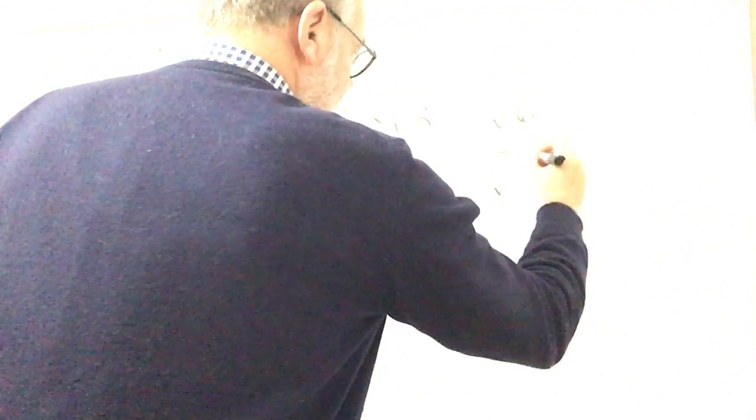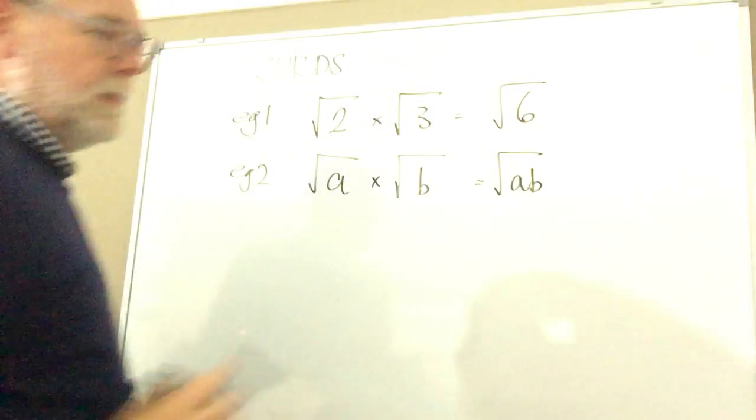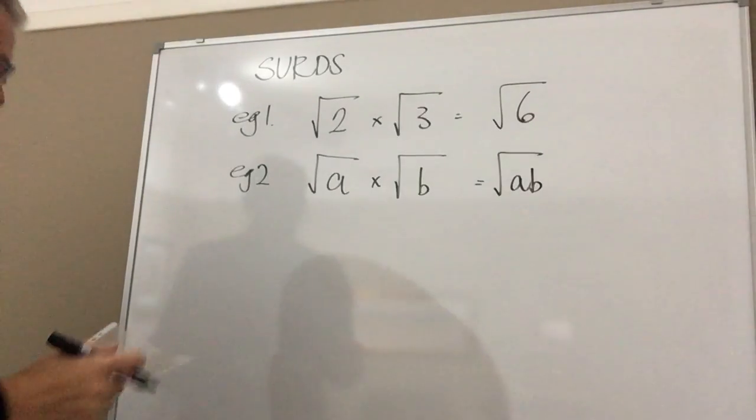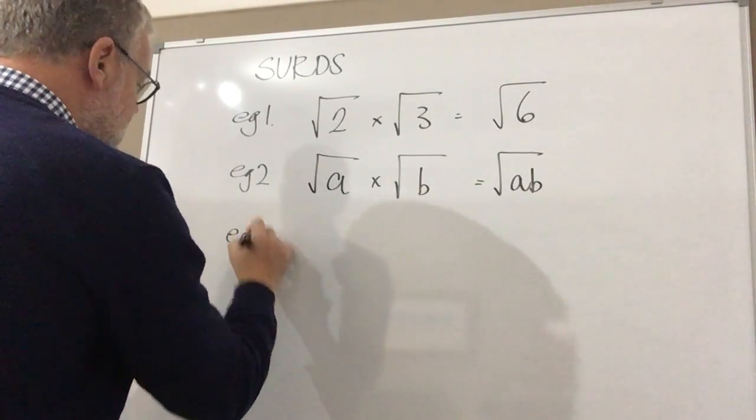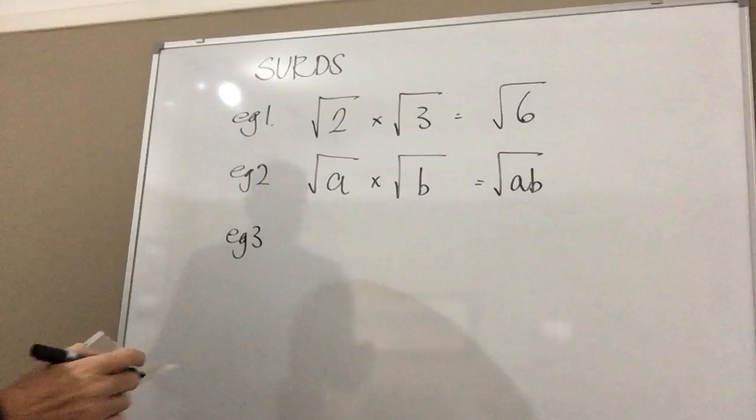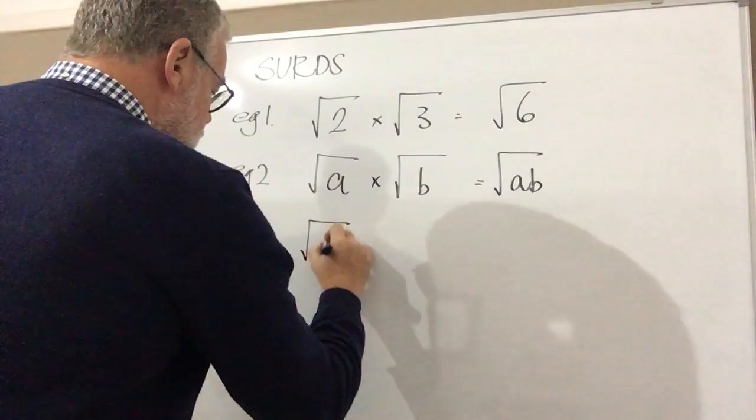Using the principle that we've just learned there, you're going to say to me the answer is root ab and you'd be correct. Now this is an interesting one, just have a look at this because this is really important to us. If I said to you what's root 9 times root 9?